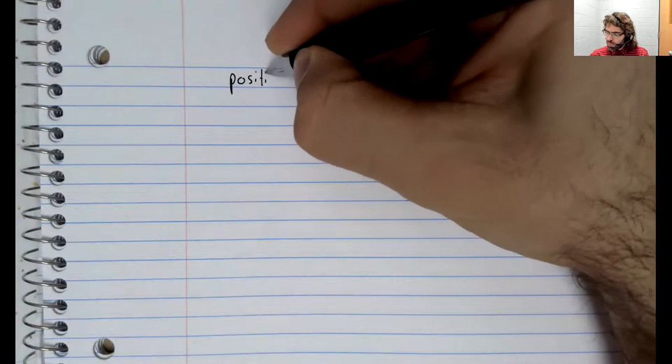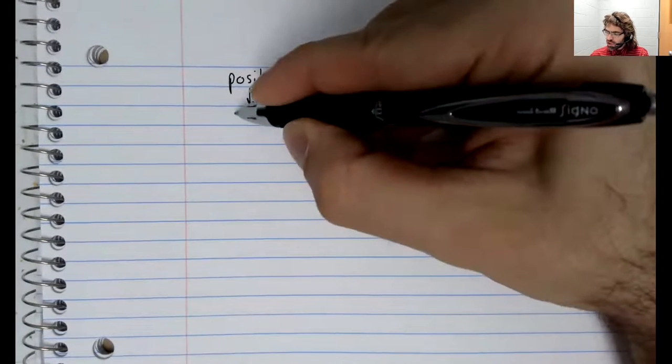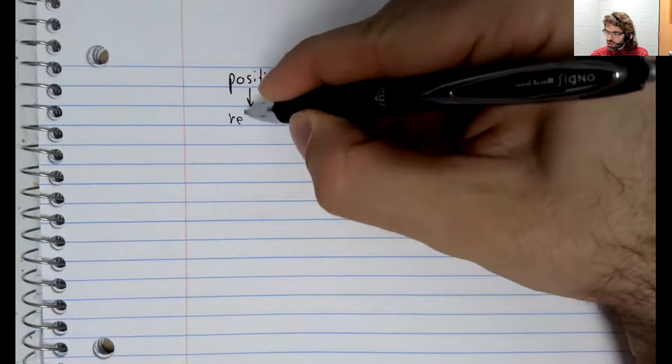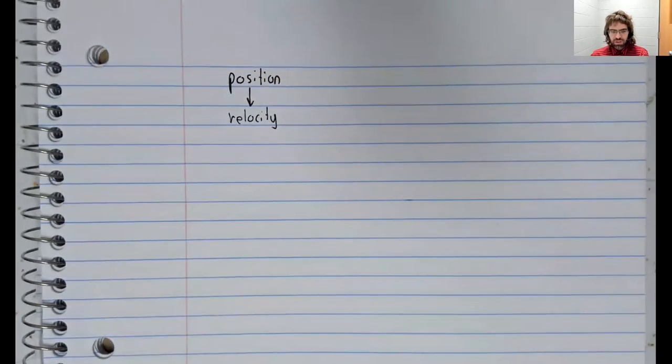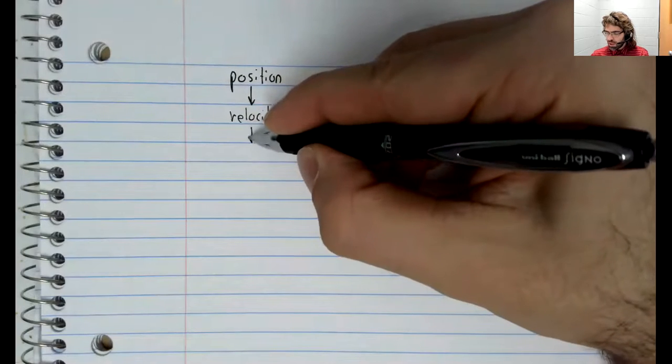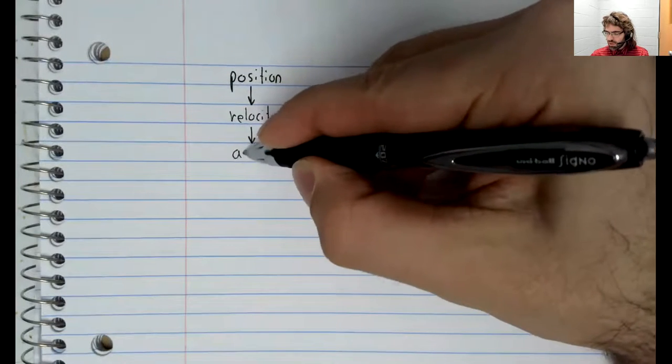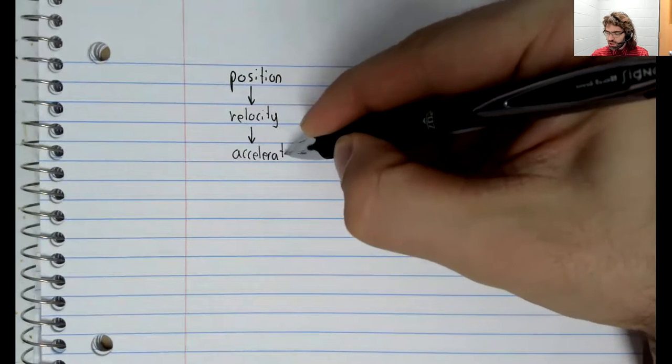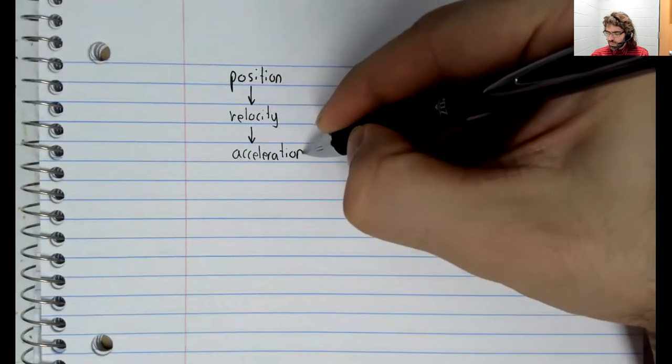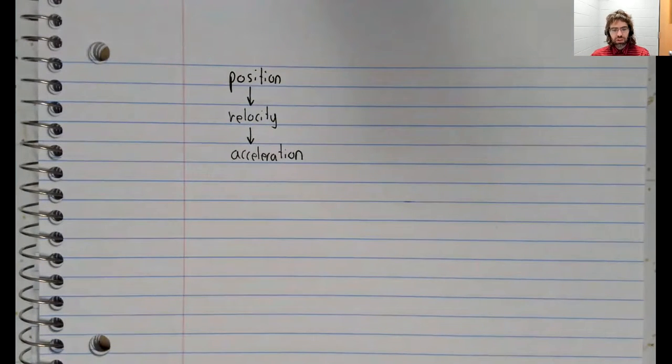We have looked at this example before. The derivative of a position function is the velocity. The derivative of the velocity function is the acceleration.